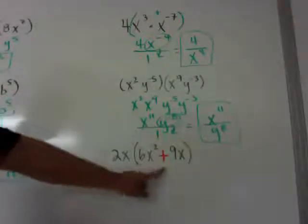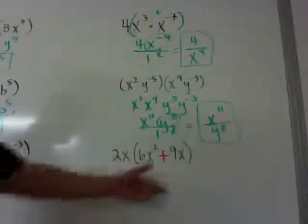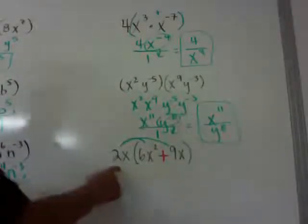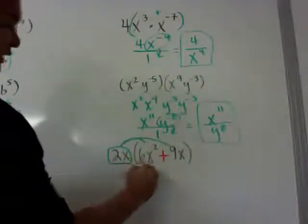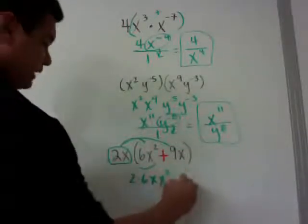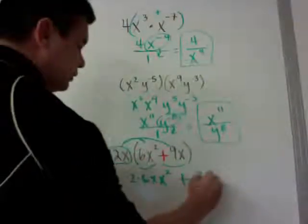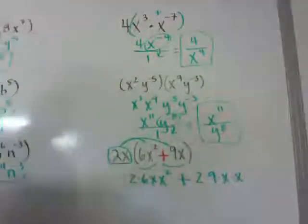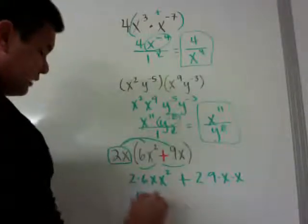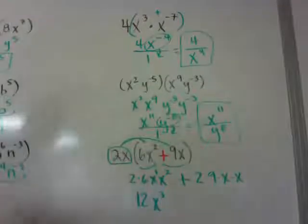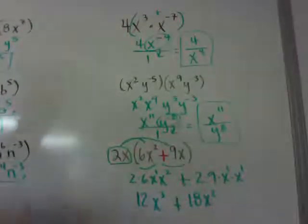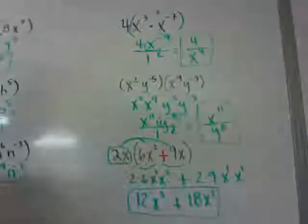If you notice there's a plus sign, you can't just move terms around — you need to use the distributive property. For 2x times the quantity 6x² plus 9x: distribute to get 2x times 6x² plus 2x times 9x. That's 2 times 6 times x times x squared, plus 2 times 9 times x times x, which gives 12x cubed plus 18x squared. You can't simplify further because they're not like terms.